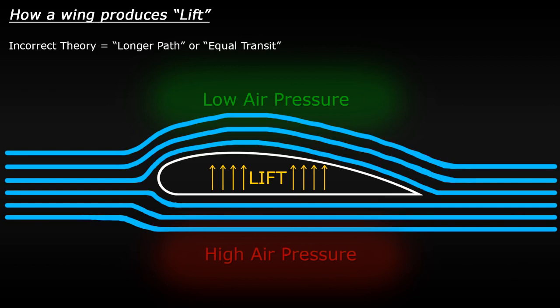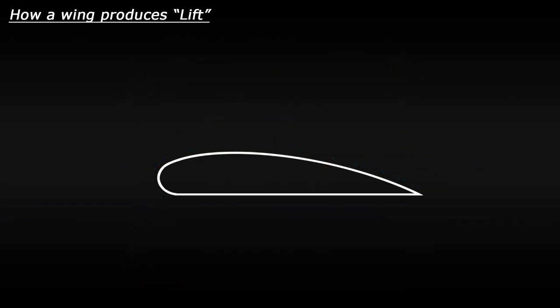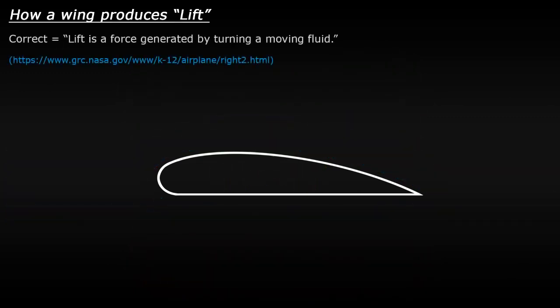Now, there are a few aspects of this theory which are correct, but it doesn't tell the full story. So I'm going to give you the correct answer first and then try and explain what's going on after. The correct answer is that lift is created because a wing or an aerofoil is turning the airflow and directing it downwards. It's not a pressure difference which creates lift.